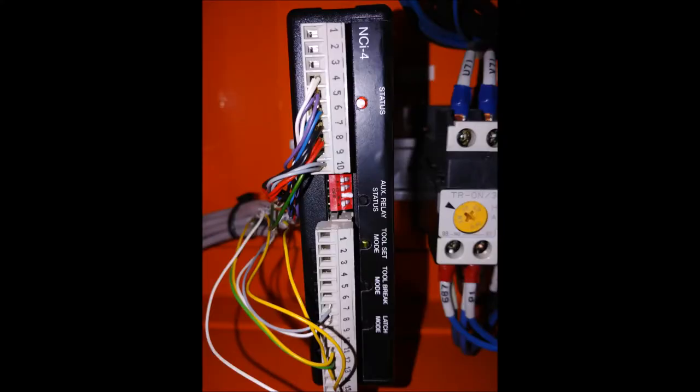Open the electrical cabinet to your machine and find a box labeled NCI-5. If you have an older laser system, this box may be labeled NCI-4 but is identical in appearance to the NCI-5. Locate the four dip switches on the front of the box.